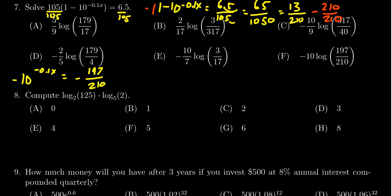You can times both sides by negative, since there's a negative sign right there. And so that gives us 10 to the negative 0.1x is equal to positive 197 over 210.